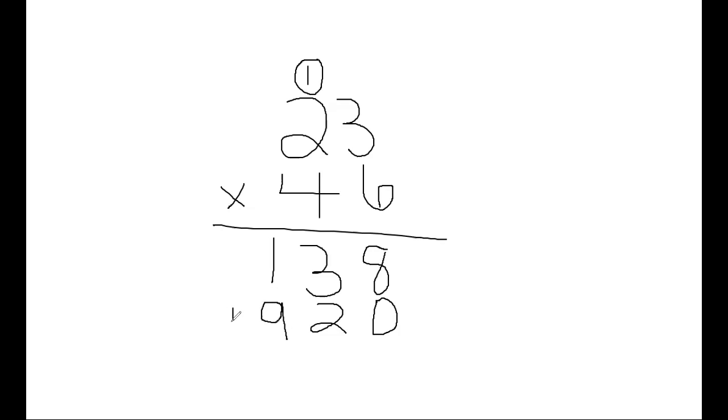And then our last step is to add these two numbers together. So eight plus zero is eight, three plus two is five, and one plus nine is 10. So our answer would be 1058.